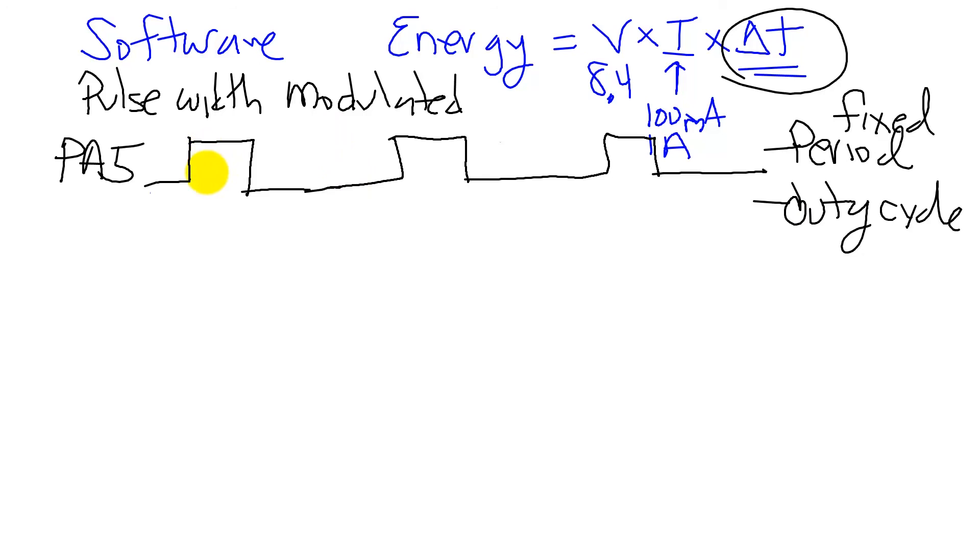But the duty cycle is going to vary. So if I label this time H for high, and this time L for low, that's the time, and there's an H and there's an L and there's an H.